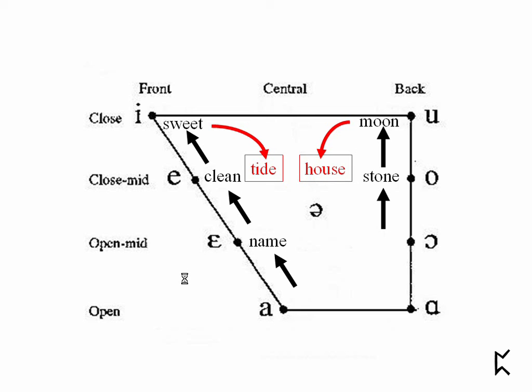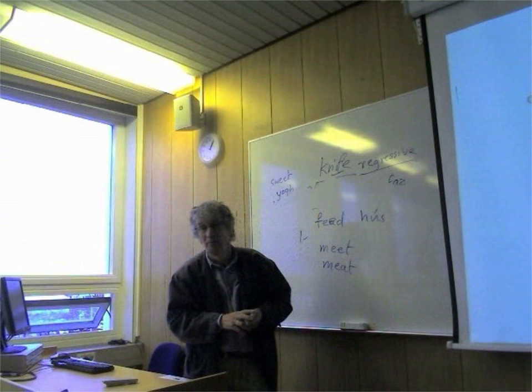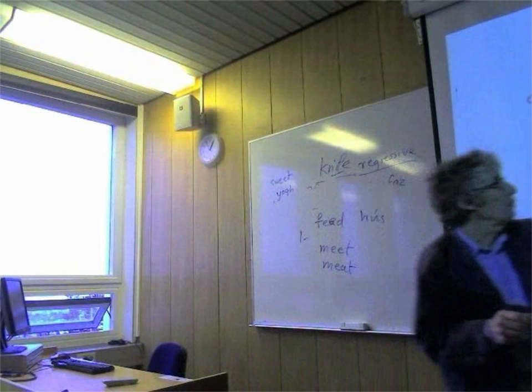So 'tide' changed through 'taide', 'taide', and 'hoose' changed through 'hoose', 'house', 'house'. And that movement is still going on with the diphthongs - 'tide' is now 'tide', it's still going on in London to become 'toid toid'. That's the same movement continuing. And 'sweet' is going down following 'tide' - in London people are saying 'sweet' very sweetly.